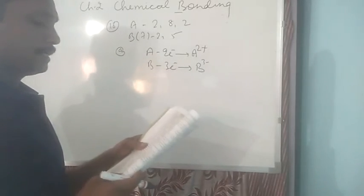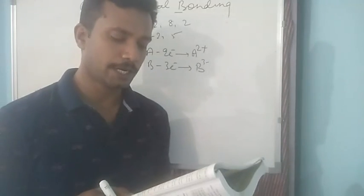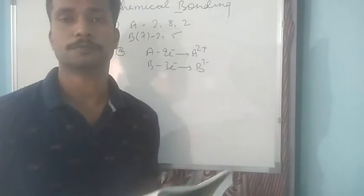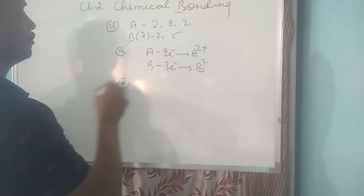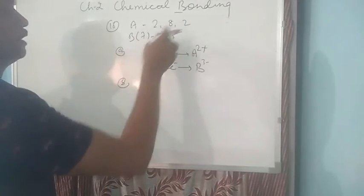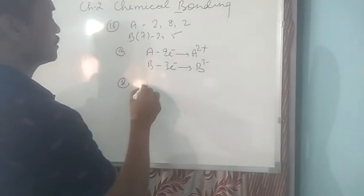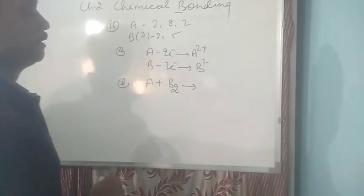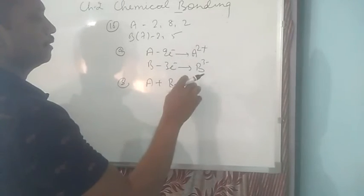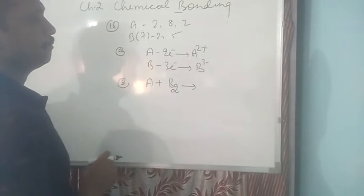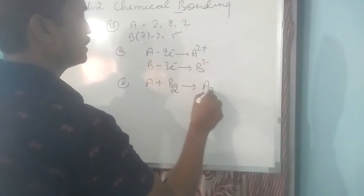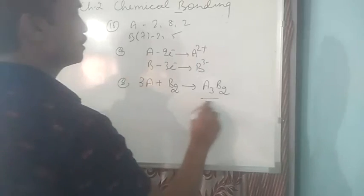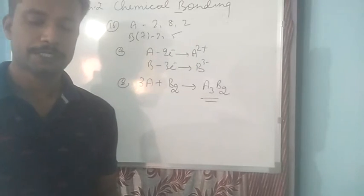Next is if B is a diatomic gas, write the equation for the direct combination of A and B to form a compound. So that means we have to now combine A and B where B is a diatomic gas. So we can write B as B2. And then the compound will be by combination of A and B. But using the valency we can write A3B2. So this is the compound.